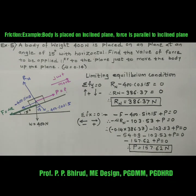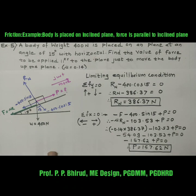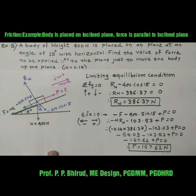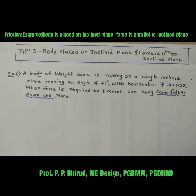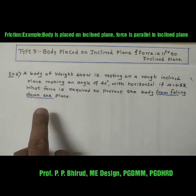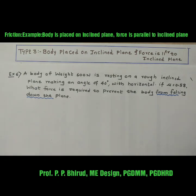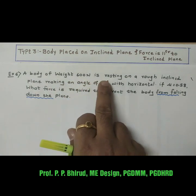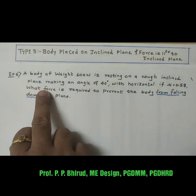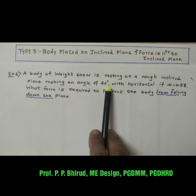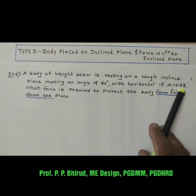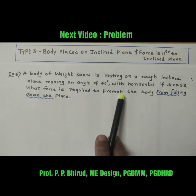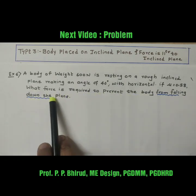Such type of example is always asked for six marks in question number 5B. In the next video, we will solve a problem of the same type: a body of weight 600 Newton is resting on a rough inclined plane making an angle of 40 degrees with the horizontal. If mu is 0.58, what force is required to prevent the body from falling down the plane?